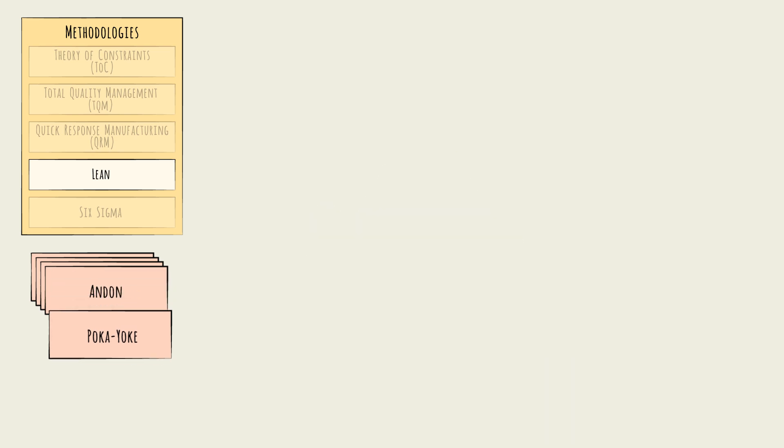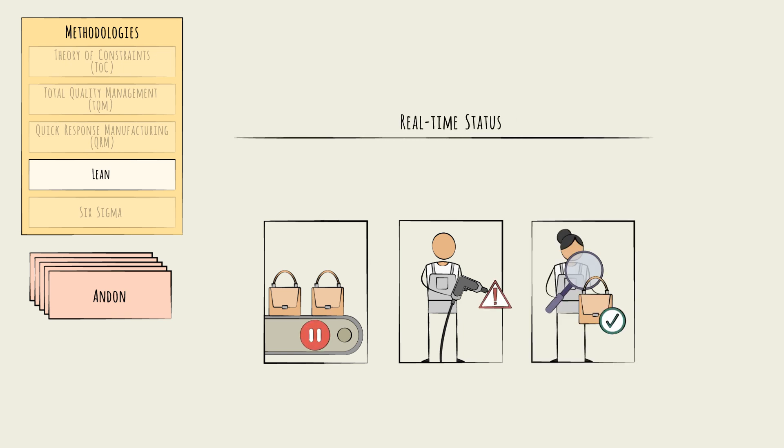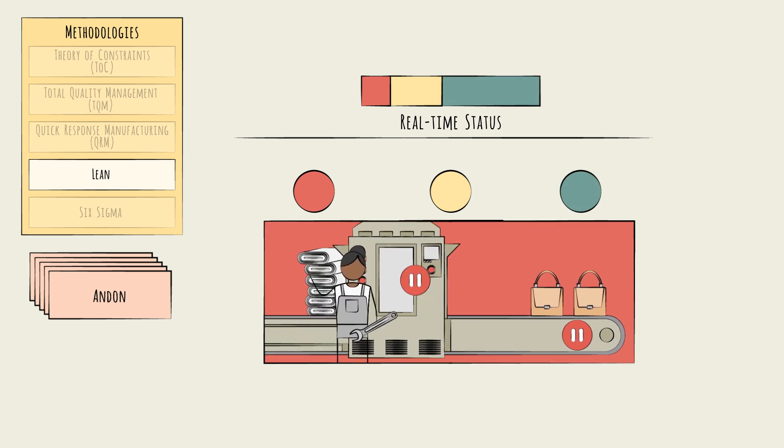Another Lean strategy is the Andon system. The idea here is to use real-time status indicators at every step of a manufacturing process. Red, yellow, green. Real-time status tracking can help manufacturers respond quickly to issues and avoid compounding wastes.